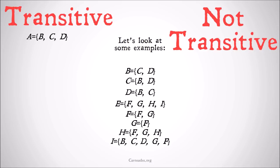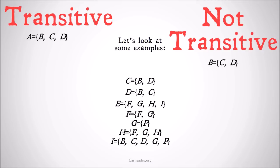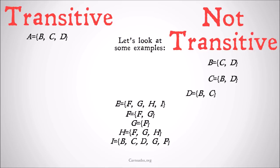What about B? B has as its elements C and D. C is not a subset of B because it includes B, and B doesn't have itself as a member. So B is not transitive. C has as its members B and D. B has as members C and D — that's not a subset of C because C isn't a member of itself. So C is also not transitive. And for the same reason D won't be transitive either, because both B and C — the members of D — contain D, so they can't be subsets of D because D doesn't contain itself.